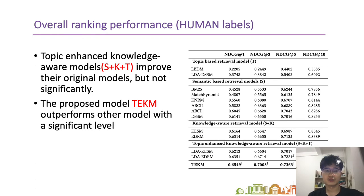We also evaluate ranking performance on human annotated labels. We find that the trends on human annotated labels are very similar to the click labels — simple combinations of three relevance dimensions do not show significant differences compared to their original retrieval models, while our proposed model outperforms all baselines by a large margin.